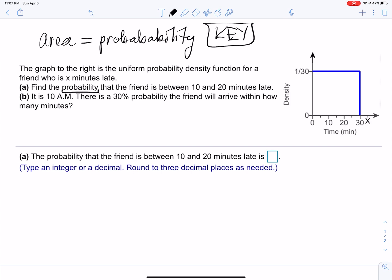Notice that it's saying in part a to find the probability, so all we got to do is find the area. We know in geometry that the area of a rectangle equals base times height.